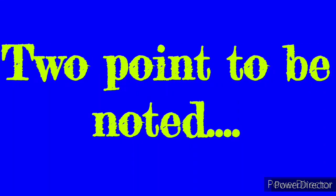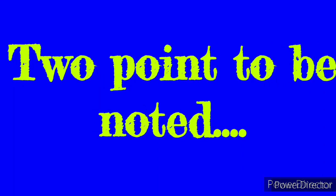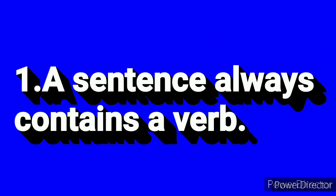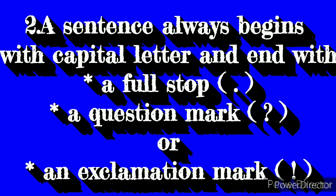There are two points to be noted. First point: a Sentence always contains a verb. Verb means action words. Second point: a Sentence always begins with a capital letter, and it ends with a full stop, a question mark, or an exclamation mark.